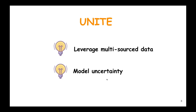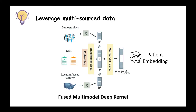To address the aforementioned challenges, we propose UNITE, an uncertainty-based risk prediction model. UNITE aims to leverage multi-source data and to model uncertainty scores simultaneously. In order to leverage multi-source data, we propose a fused multi-modal deep kernel module.